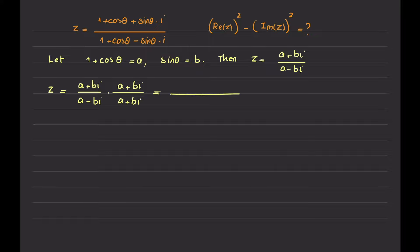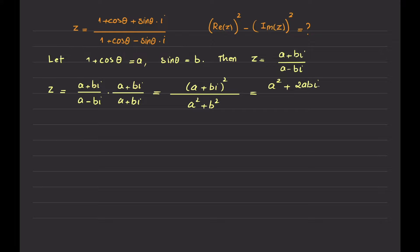The denominator, when multiplied, uses the conjugate rule and becomes A squared plus B squared. The numerator is A plus B i multiplied by itself, which is A plus B i squared. Expanding: the first term squared plus 2 times the first times the second plus the second squared — but since i squared is minus 1, the last term becomes minus B squared.